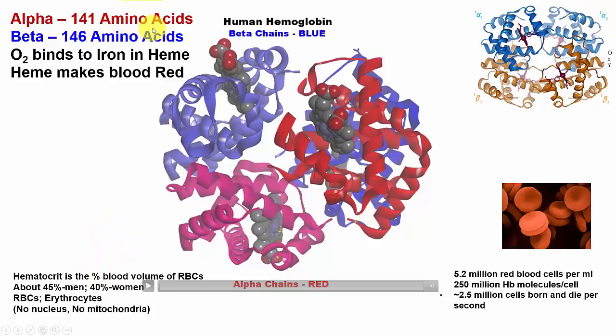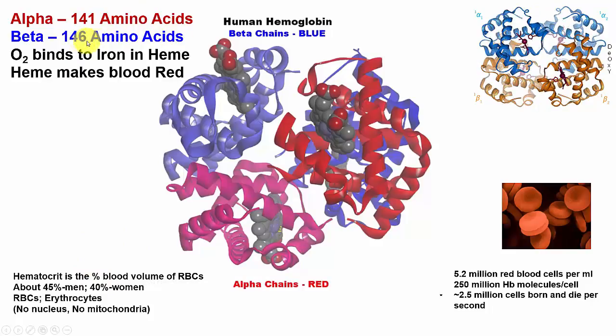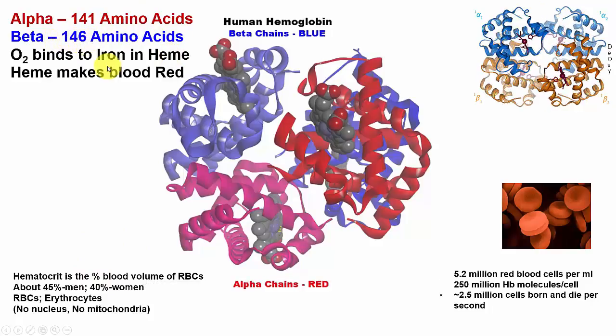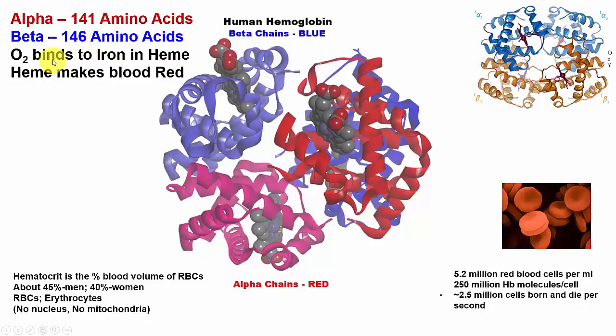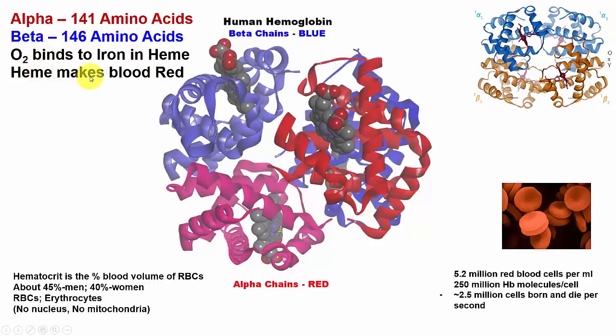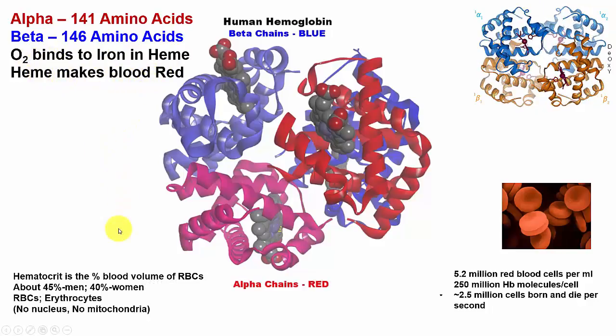The alpha chains have 141 amino acids; the beta chains are a little longer at 146 amino acids. O2 binds to the iron in the heme, and heme makes blood red.